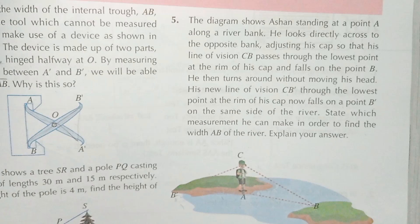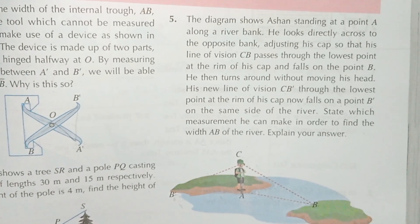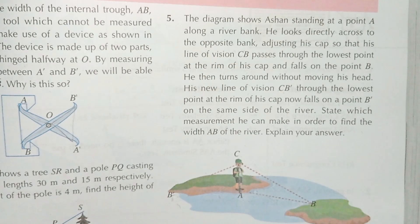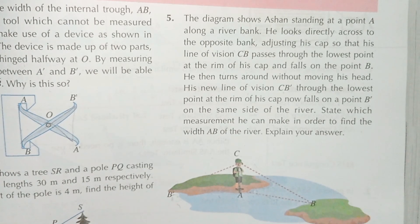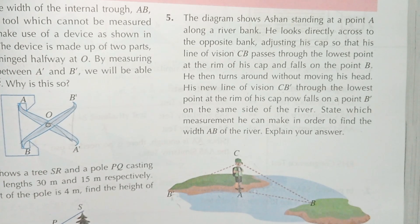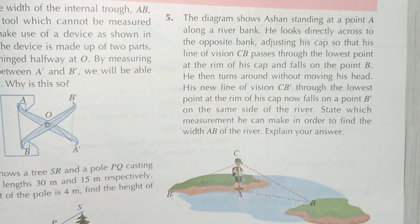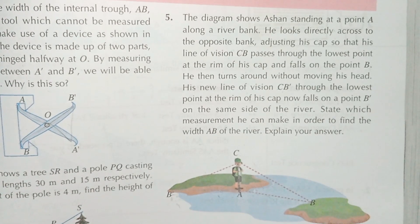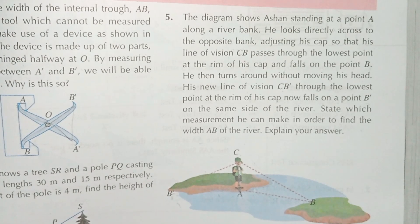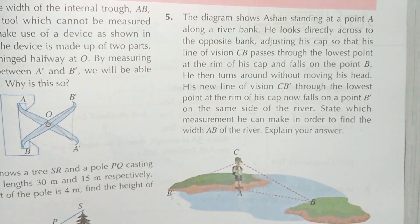Question number five: the diagram shows a man standing at point A along a riverbank. He looks directly across to the opposite bank, adjusting his cap so that his line of vision CB passes through the lowest point at the rim of his cap and falls on point B. He then turns around without moving his head; his new line of vision CB' falls on point B'. We need to state which measurement he can make to find the width AB of the river.